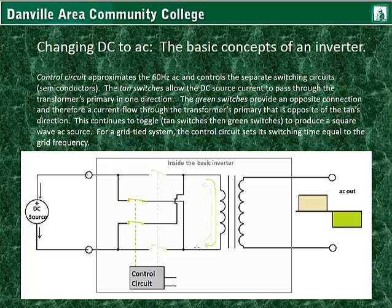Quickly after that, the switches change positions — the TANs open up as shown in the diagram and the greens close — and now electrical current is provided to the transformer in the opposite direction.